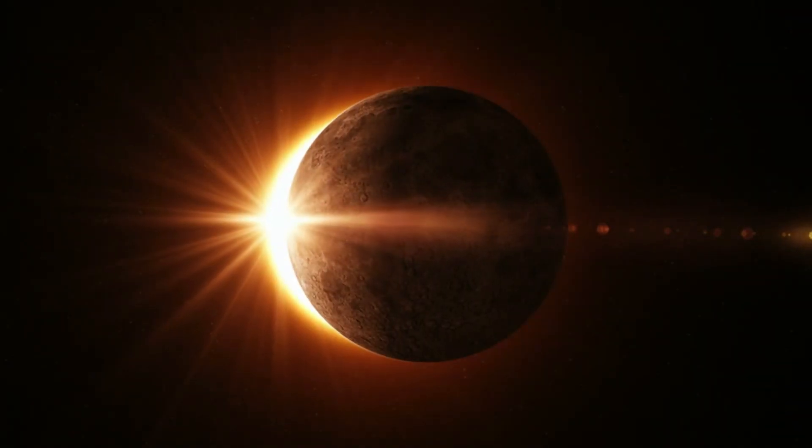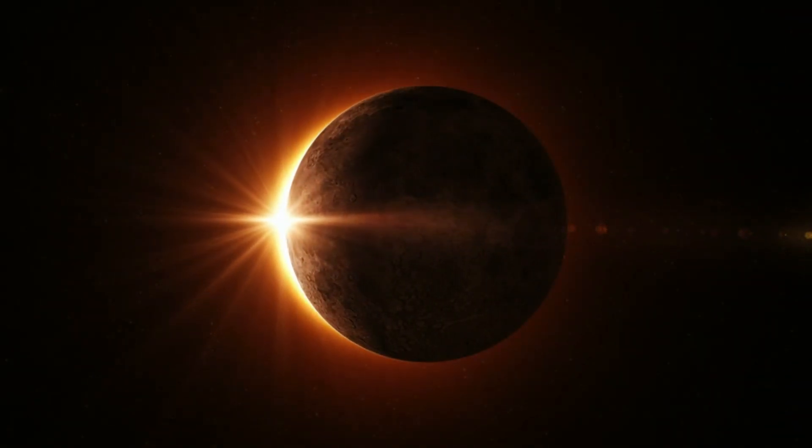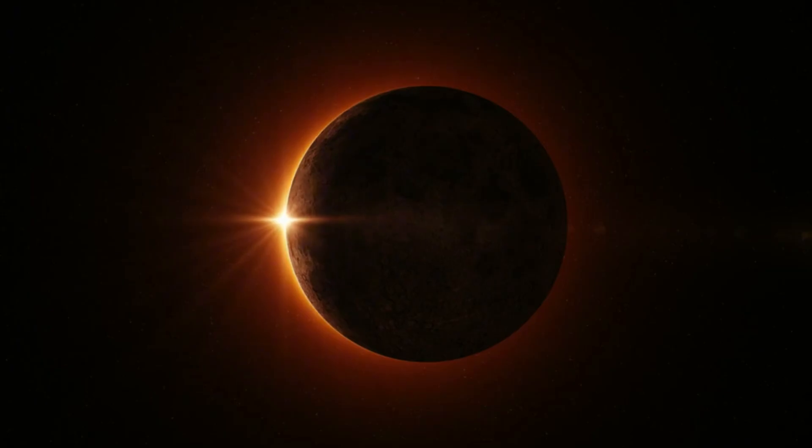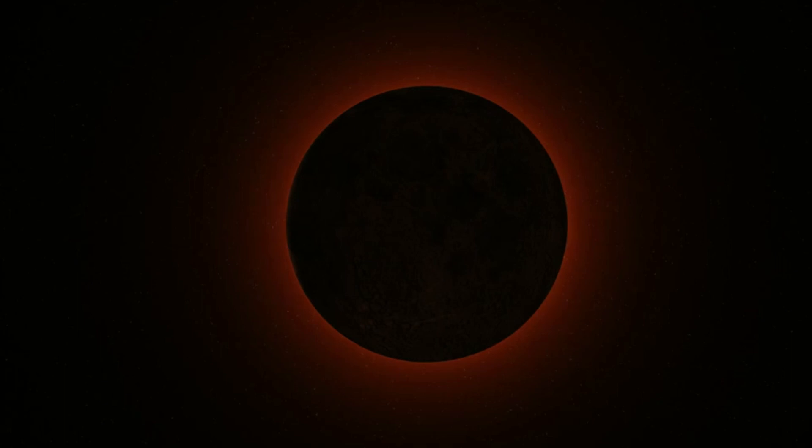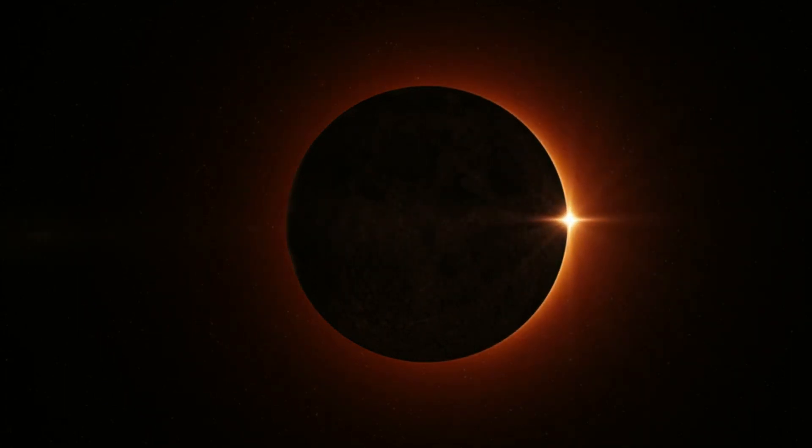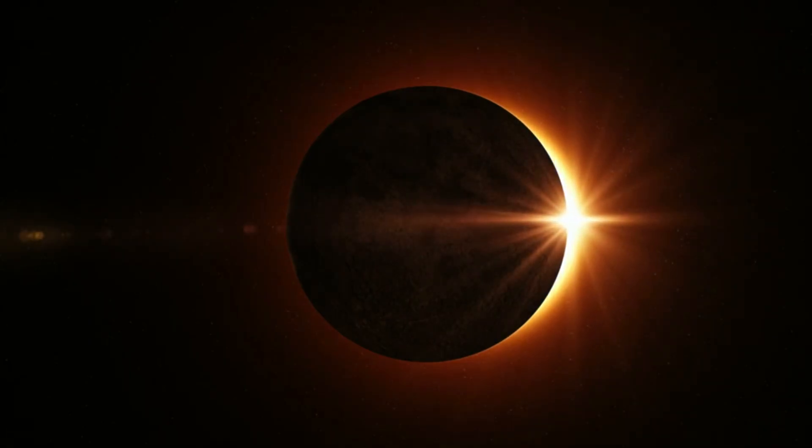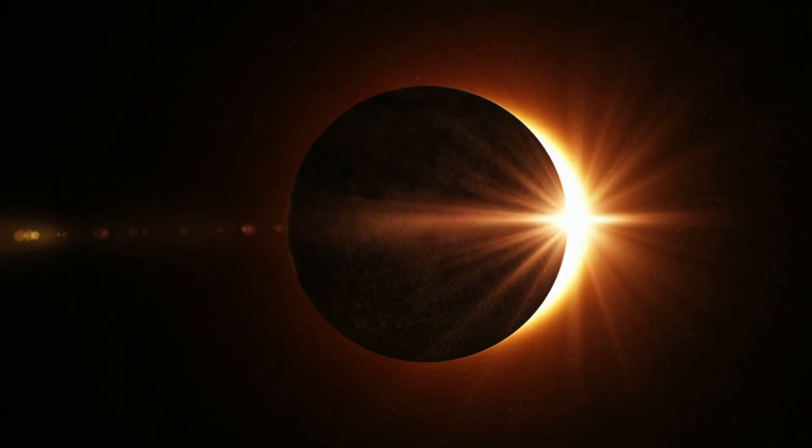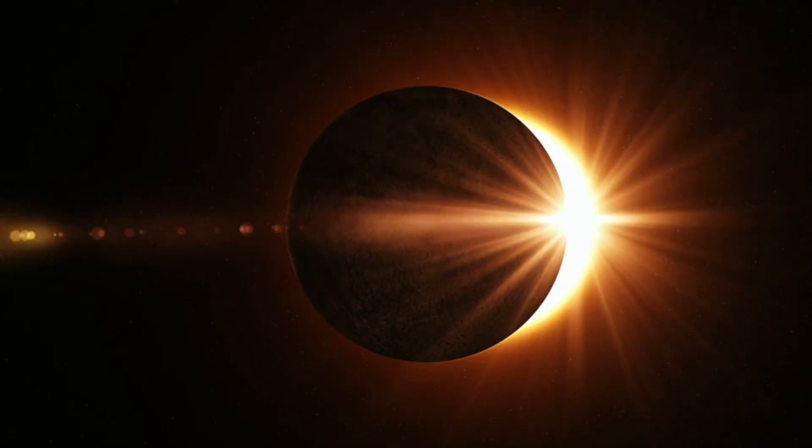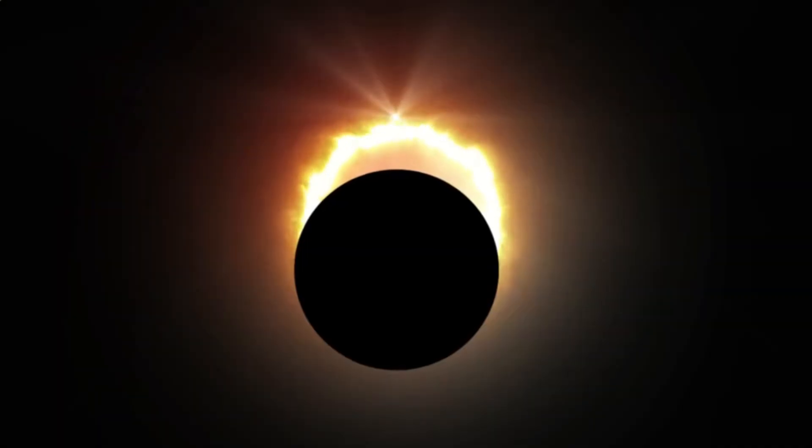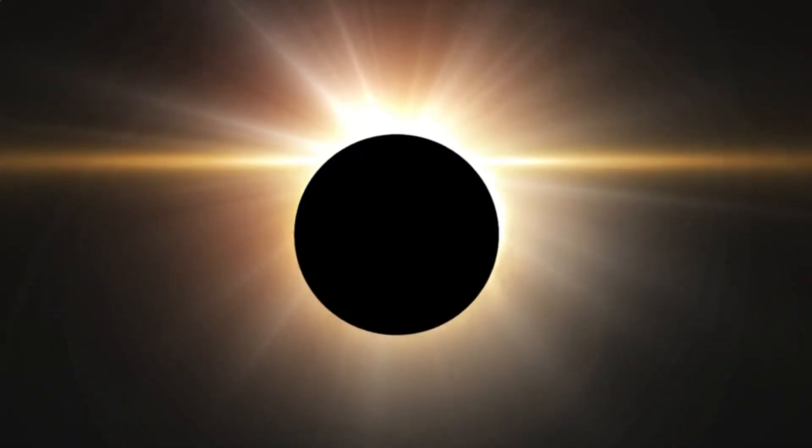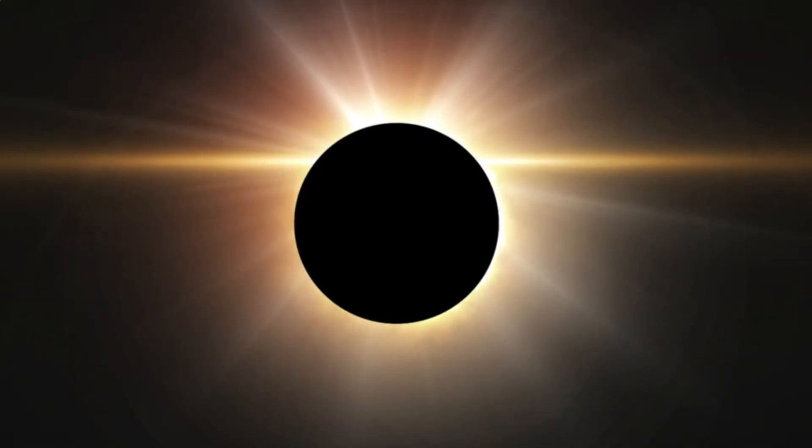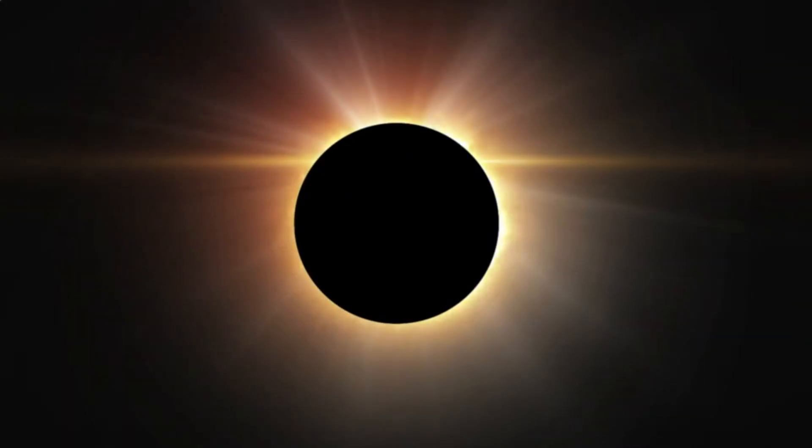We're starting our journey at the edge of the sun, with something you've probably seen but never fully understood. The corona. It's that ghostly halo that appears during a total solar eclipse, like a glowing crown around the darkened sun. But don't be fooled by its beauty. This outer layer is wild. And the deeper we look, the stranger it gets.